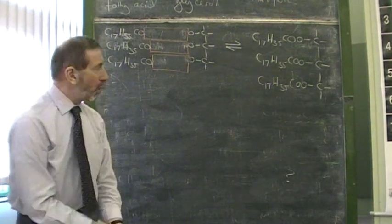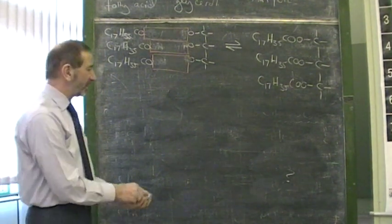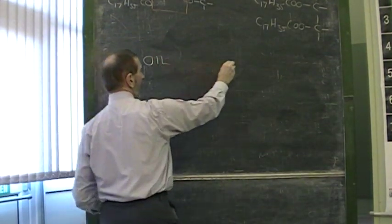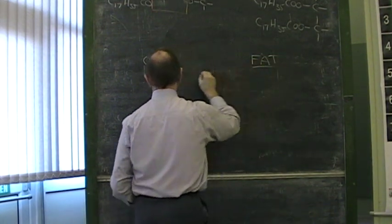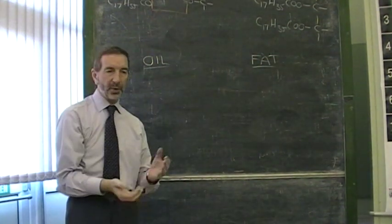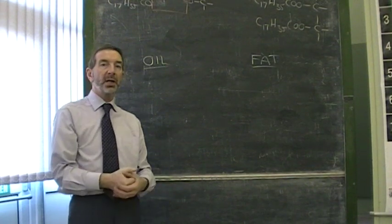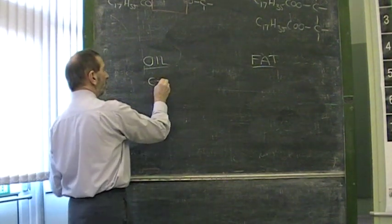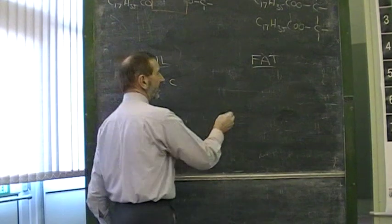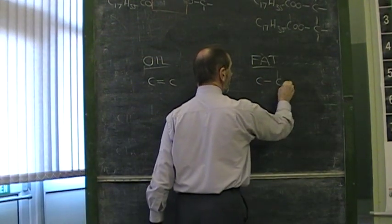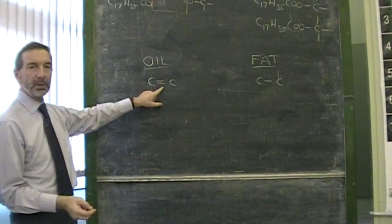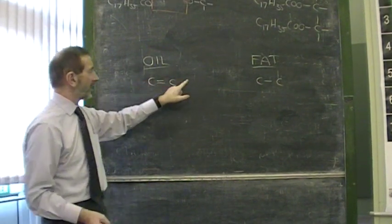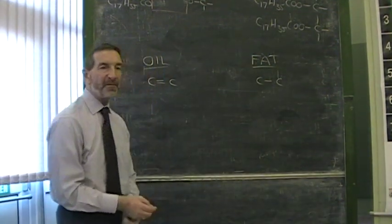Now the next question we need to ask is, what makes a fat a fat and an oil an oil? Let's compare them. Oil, fat. If you were actually presented with the models of these molecules, you'd have to look pretty closely to spot the difference. The difference is very slight sometimes. An oil has double bonds. A fat tends not to have double bonds. So the presence of one or more double bonds in this big molecule makes it oily. Whereas the absence of double bonds makes it more fatty.